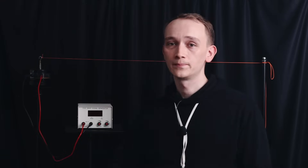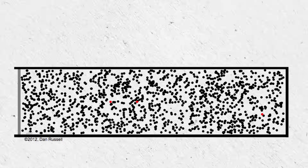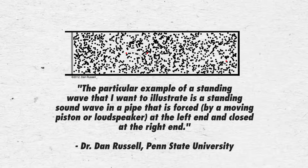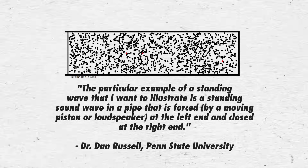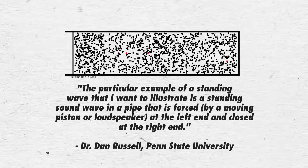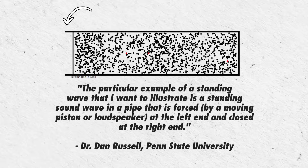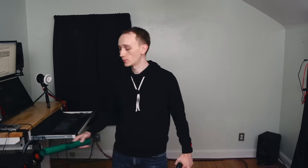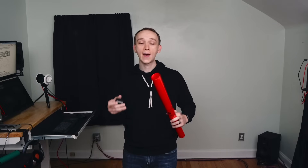So why are these animations, and the string example from earlier, flawed visualizations of room modes? On one end of the graph we see a fixed boundary, but on the other end there's not a fixed boundary. Dr. Russell said it himself: the example illustrates a standing sound wave in a pipe forced by a moving piston or loudspeaker at the left end and closed at the right end. You probably already know that the length of a pipe impacts its resonant frequency, but this idea of closed versus open on the ends is also very important. Just listen to the sound of this pipe with a cap on one end.